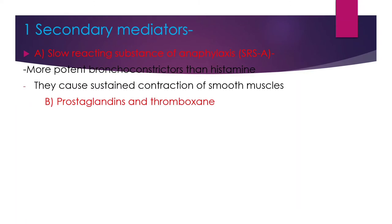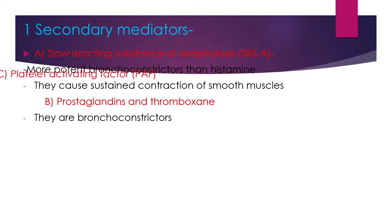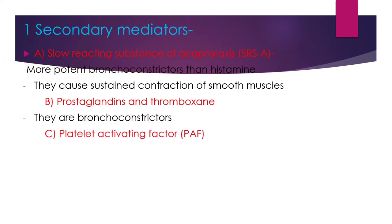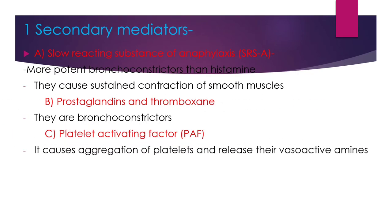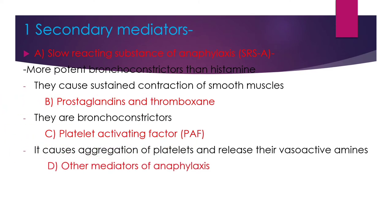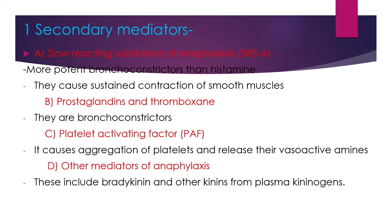Secondary mediators include slow reacting substances of anaphylaxis, which are more potent bronchoconstrictors than histamine and cause sustained contraction of smooth muscles. Prostaglandins and thromboxane are also bronchoconstrictors. Platelet activating factor causes aggregation of platelets and release of their vasoactive amines. Other mediators of anaphylaxis include bradykinin and other kinins from the plasma.